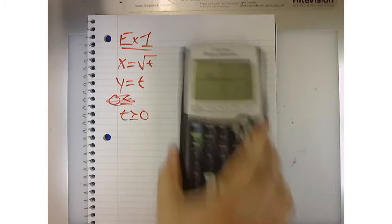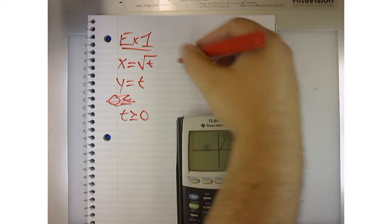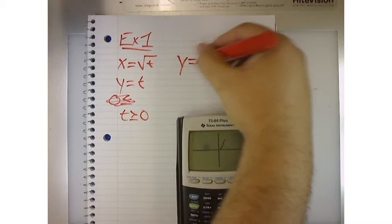Yeah, y equals x squared, right? So, this is the actual homework. How do I make this look like y equals x squared?